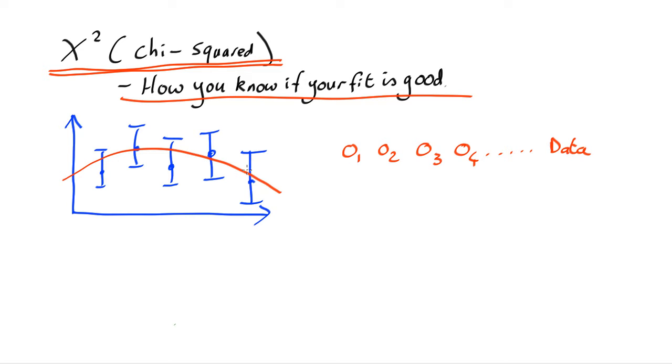And you've also got your model predictions. These are expected values. We've got E1, E2, E3, and so on. Model predictions.